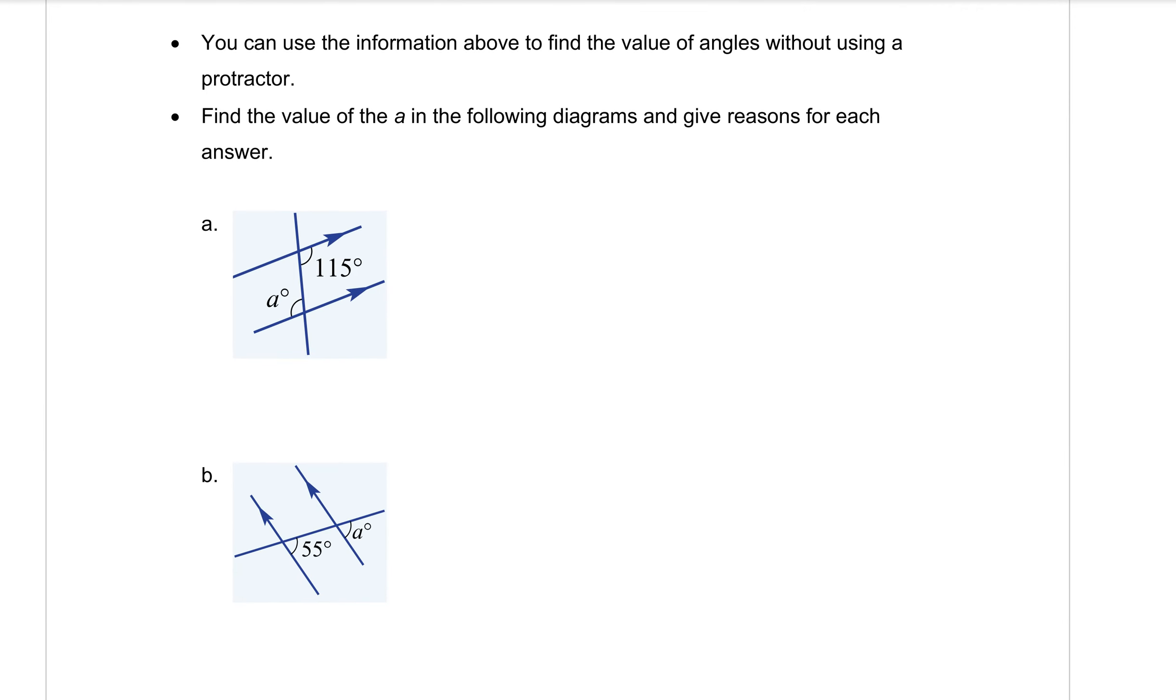Let's have a look on the next page for the questions that we need to do. So it says you can use the information above to find the value of angles without using a protractor. Because most of the diagrams that we're going to be given aren't to scale anyway. So please don't try to use a protractor. We need to use these rules. So find the value of A in the following diagrams and give a reason for each answer. There it is again, giving the reasons.